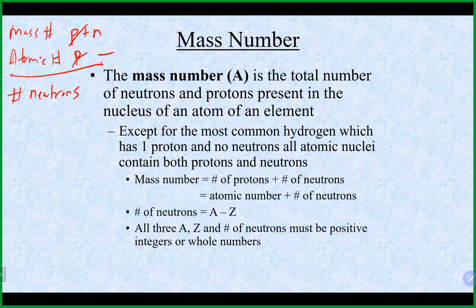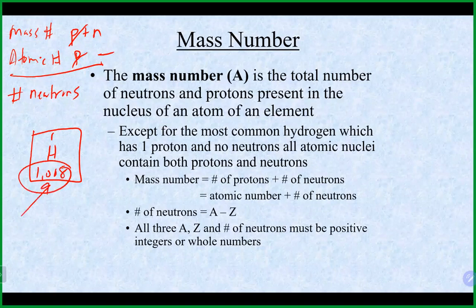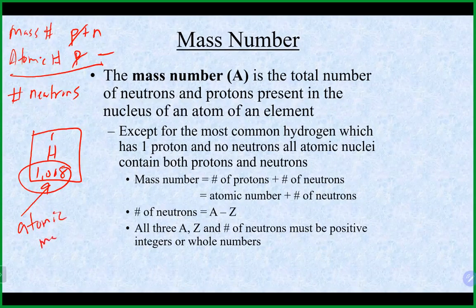When you calculate the mass number, atomic number, and number of protons, electrons, and neutrons, they must all be positive whole numbers. For example, hydrogen on the periodic table shows 1.008 — that is not the mass number, because the mass number must be a whole number. The number on the bottom of the symbol on the periodic table is the atomic mass, not the mass number.